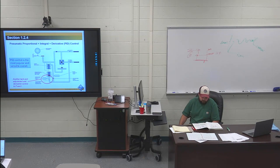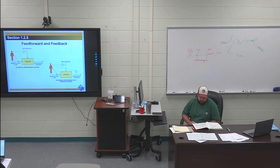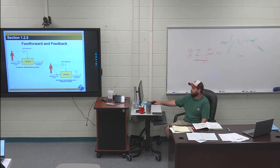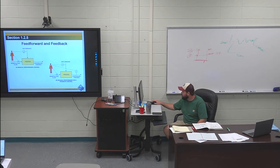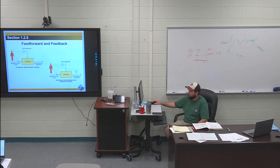Page six and seven — specific controller operation, section 125. You've got feed forward and feedback. Feed forward control is also called open loop. That's where you're physically standing there looking at the process — say a pressure gauge gets too high and you physically go shut the valve yourself. There's nothing automatically measuring pressure, temperature, level, or flow besides you or the operator, who is manually adjusting it.